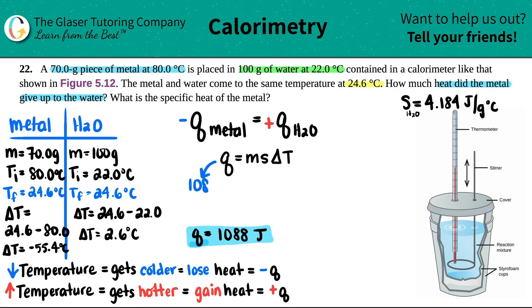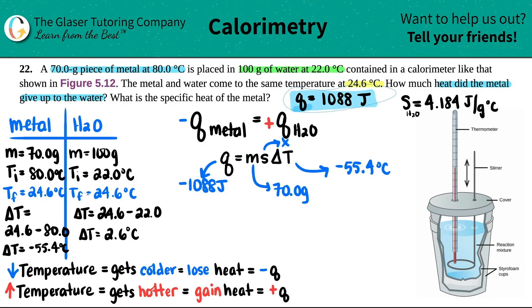So now for this part, the Q is now 1088 joules. The mass of the metal was the 70 grams. This is what we're solving for. And now we choose the delta T of the metal, which is negative 55.4 degrees Celsius. Now remember, whatever the positive Q was, this was a positive, the Q for the metal has to be negative. So this will be a negative value for the Q. Let me maybe just move this up over here. So this is the answer to the first one. That's how much heat the metal gave to the water. And now we're just going to solve for the s.